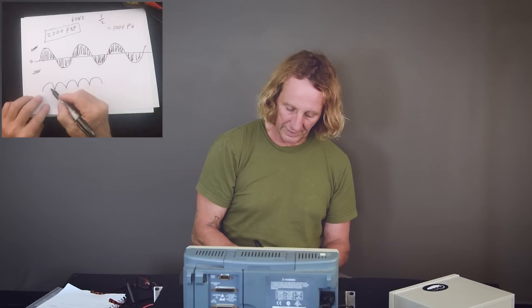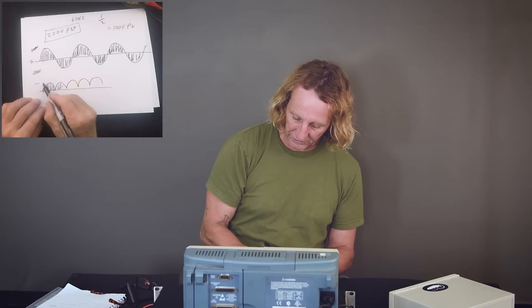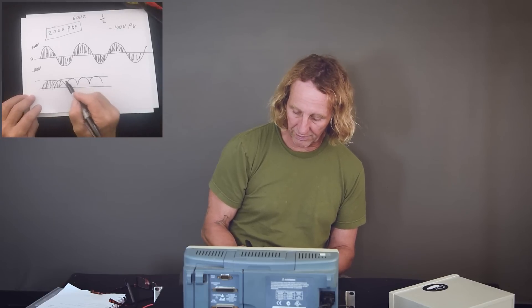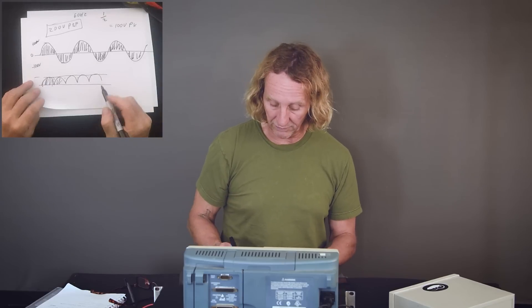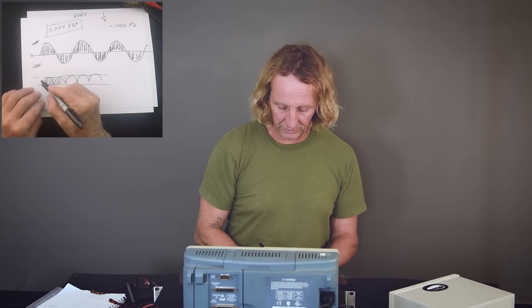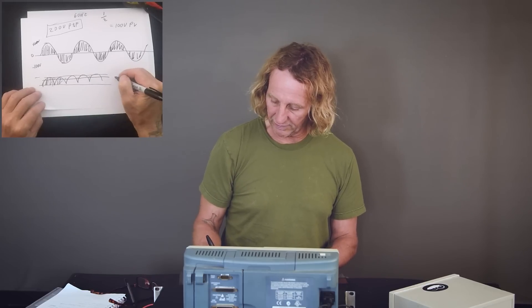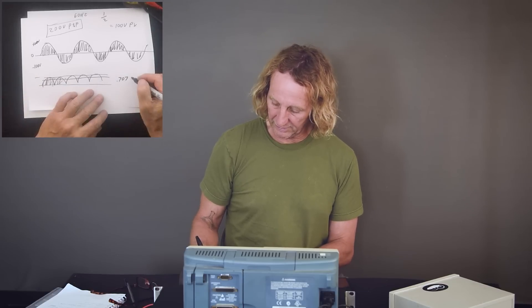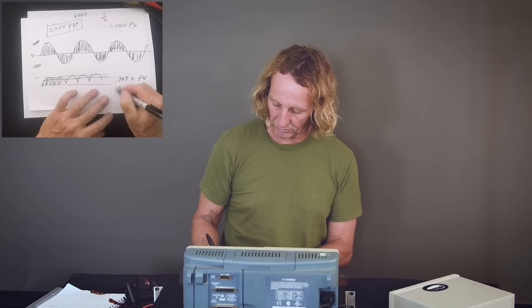But it's not a straight line. If we just use that 100 volts, we're going to be counting the dead areas that are not actual power — it's pauses between the power being delivered. It turns out if we do the math on that, it's 0.707 times the peak voltage will give you the RMS, the root mean square.